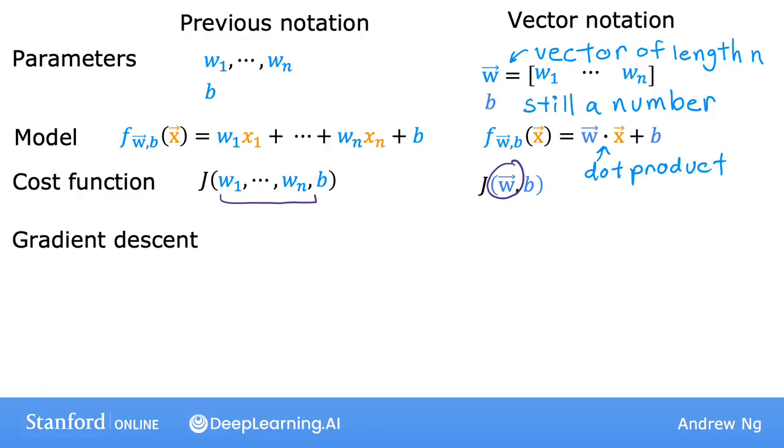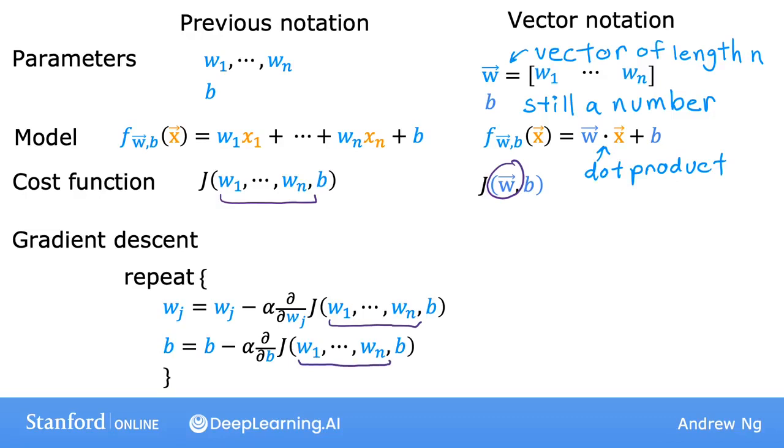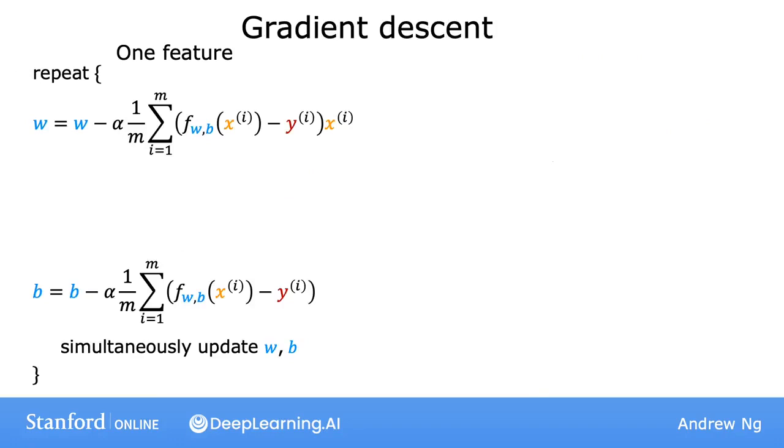And j now takes as input a vector w and the number b and returns a number. Here's what gradient descent looks like. We're going to repeatedly update each parameter wj to be wj minus alpha times the derivative of the cost j, where j has parameters w1 through wn and b. And once again, we just write this as j of vector w and number b. Let's see what this will look like when you implement gradient descent. And in particular, let's take a look at the derivative term. We'll see that gradient descent becomes just a little bit different with multiple features compared to just one feature.